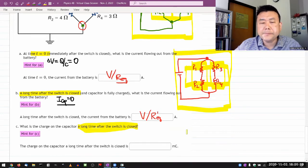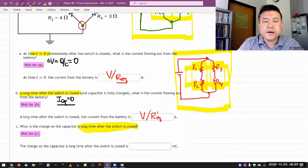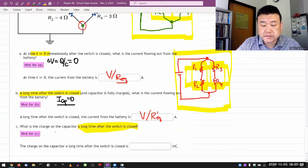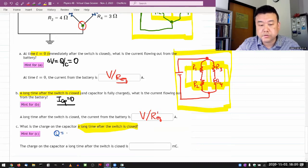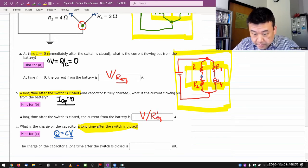And it's asking for charge on the capacitor. Yes, I'm thinking about the definition of capacitance. So rewriting it, Q is equal to Cv. So if I know the voltage drop across the capacitor, then I can figure out the charge.